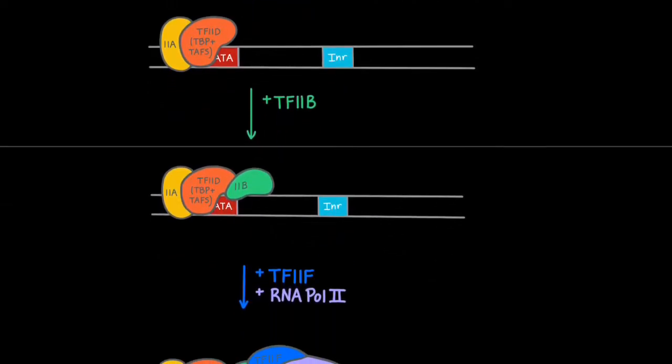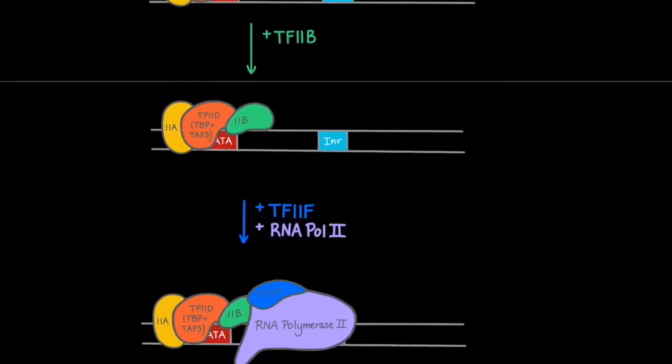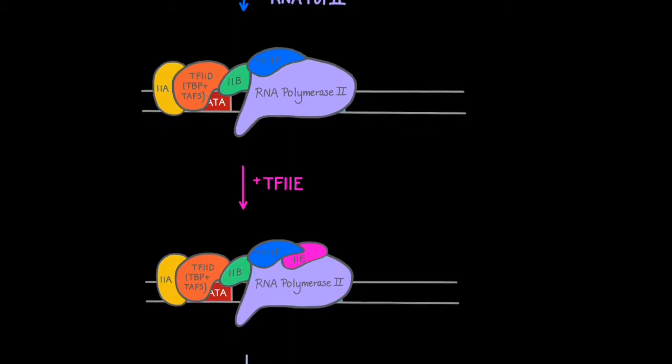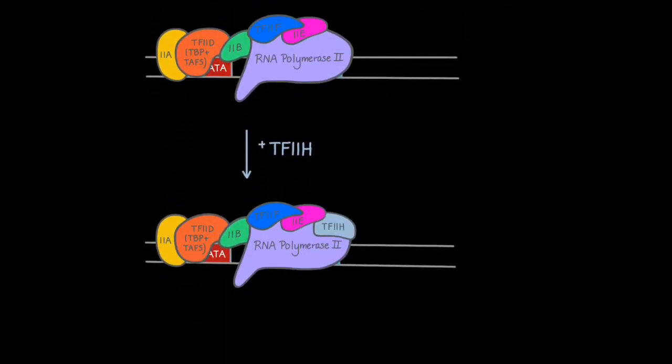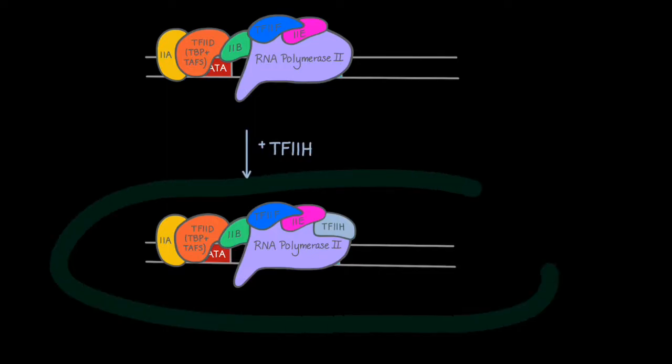After that, TF2F and RNA polymerase 2 will bind together. TF2E will then join, and lastly, TF2H will join to the now-complete pre-initiation complex. This last general transcription factor, TF2H, is the focus of the next figure and is responsible for the phosphorylation of the RPB1 subunit of RNA polymerase 2.